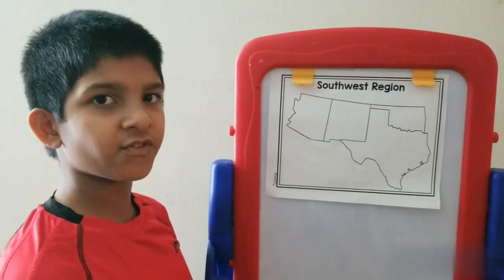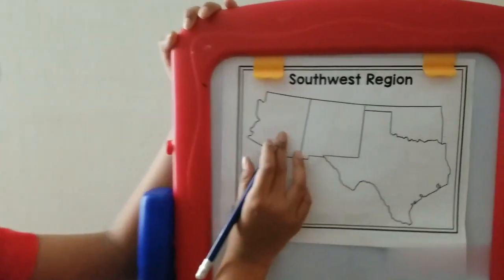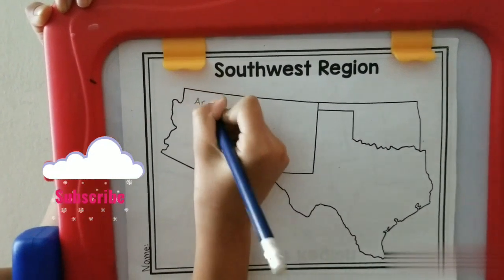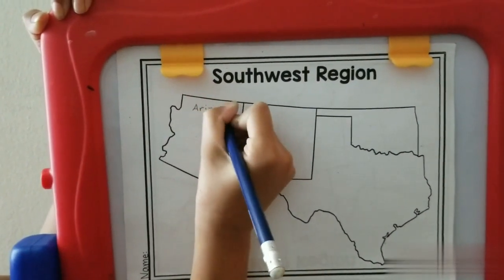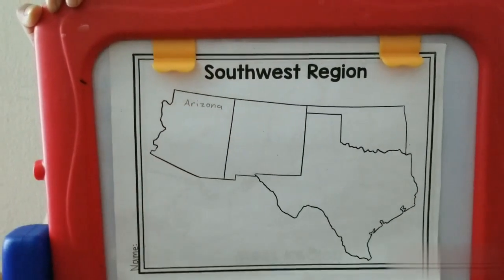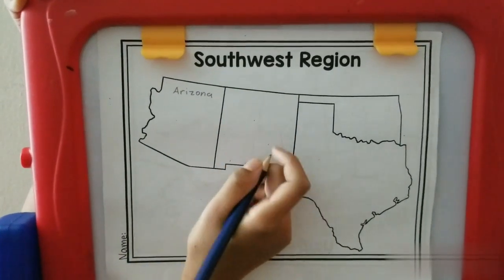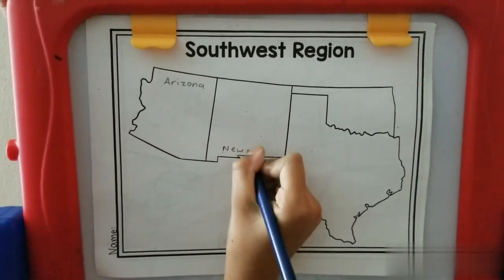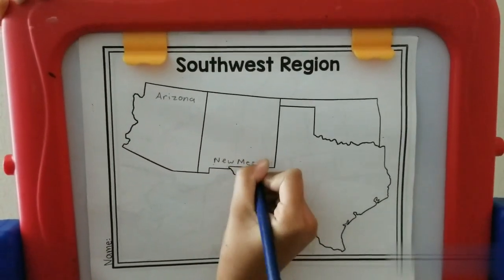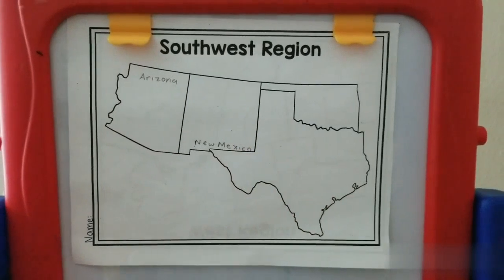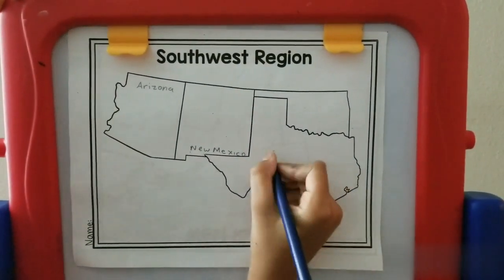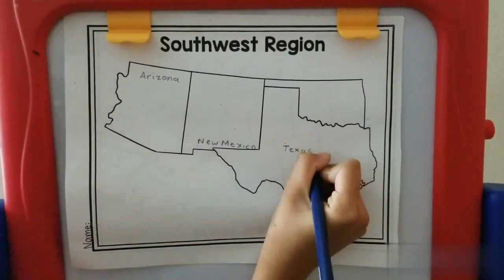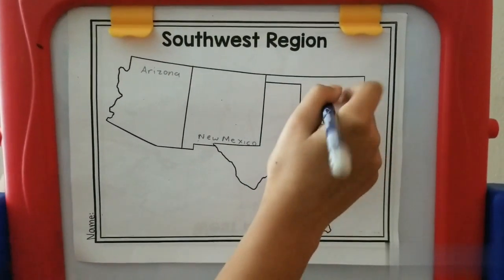So I'm going to fill the states first. For this state, it is Arizona. And this one is New Mexico. This one is Texas. And this is Oklahoma.